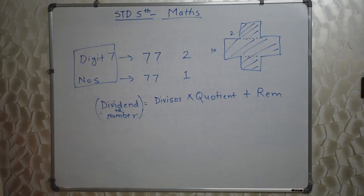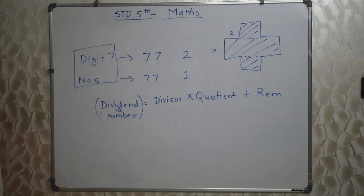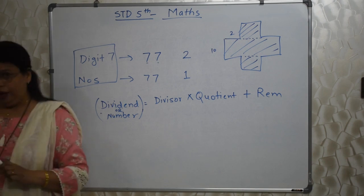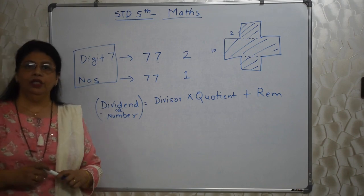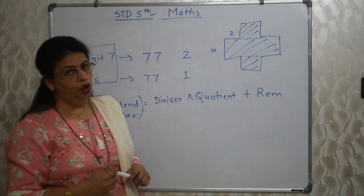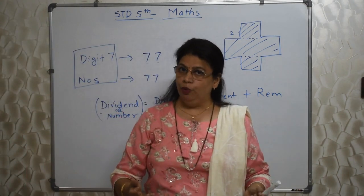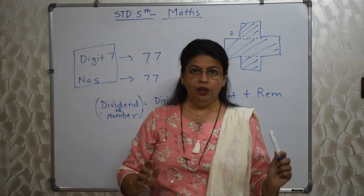Cube and cuboid — they will ask how many edges, how many vertices, how many faces, or sometimes a question on volume. It is a very easy topic. Whatever questions are there in the book, they are sufficient.